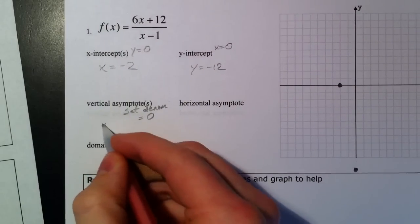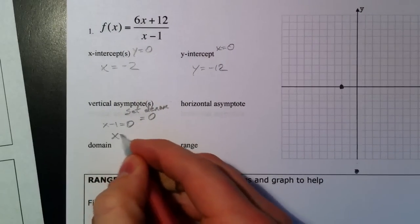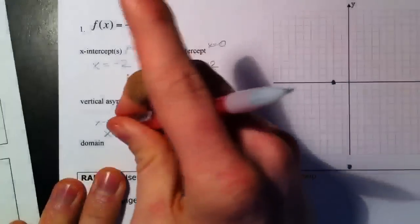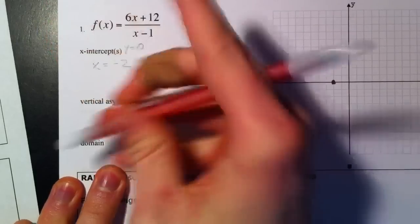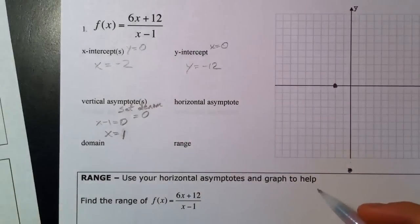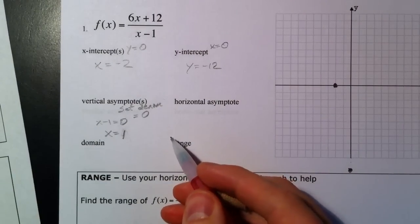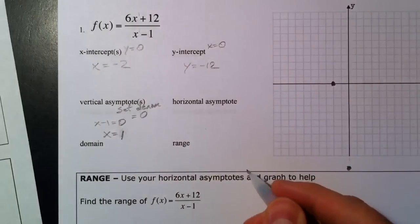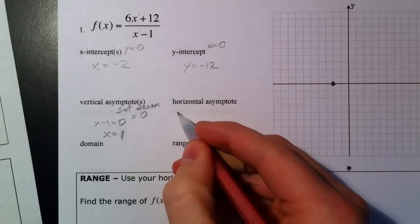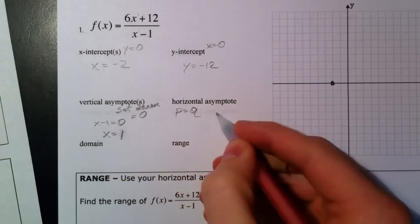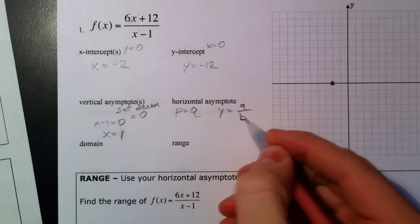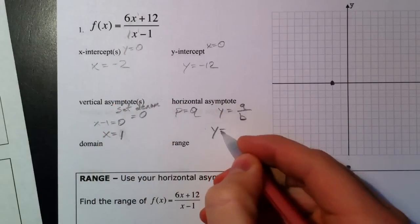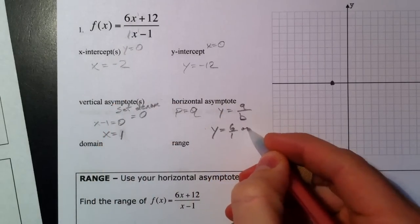Our vertical asymptote, we covered on the next page. That's when we set our denominator equal to 0. So, x minus 1 equals 0. So, x equals 1. And our horizontal asymptote. On this one, we didn't go back to it. But, the degree on top is 1, the degree on the bottom is 1. And so, we're going to have p equal to q. And so, that's y equals a over b, our leading coefficients, which is going to be 6 over 1. Or, y equals 6.